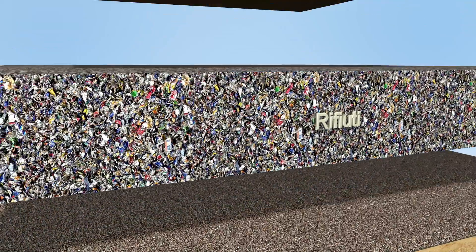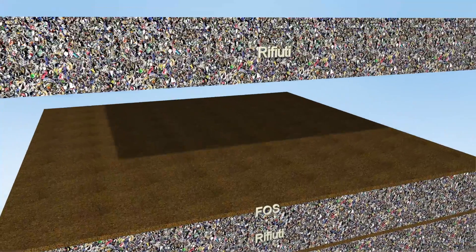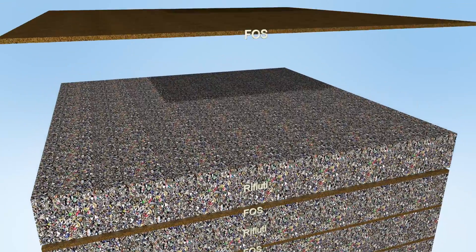Waste is laid down in alternating layers of stabilized organic waste and pre-treated dry waste, 2 or 3 meters thick.